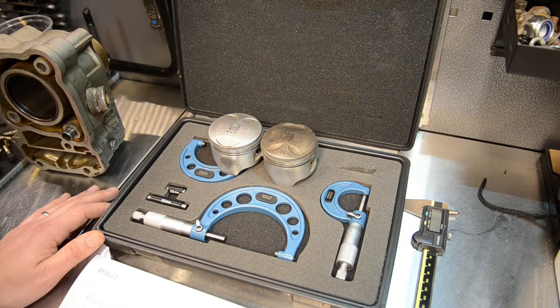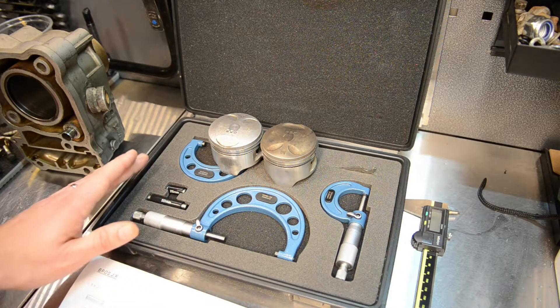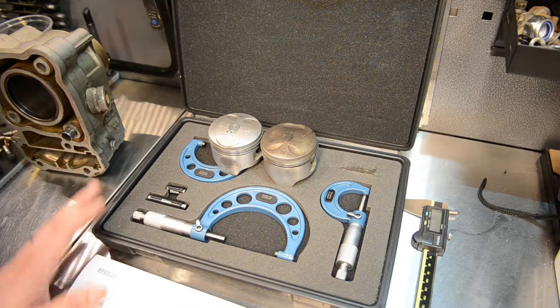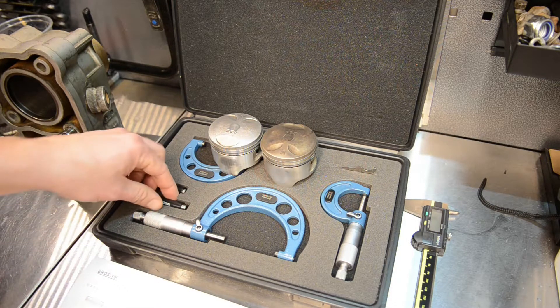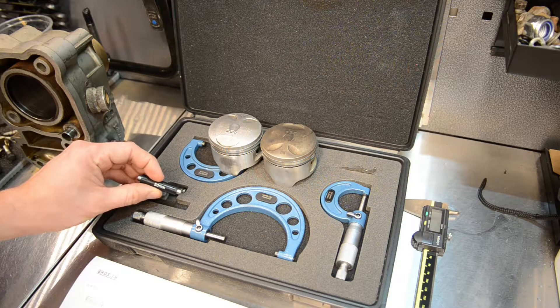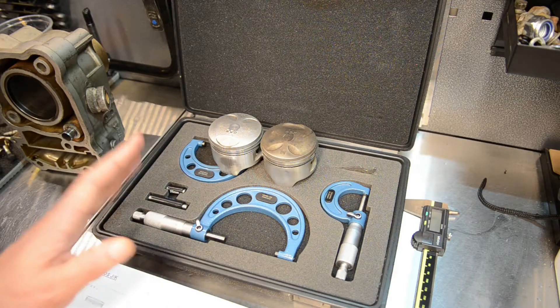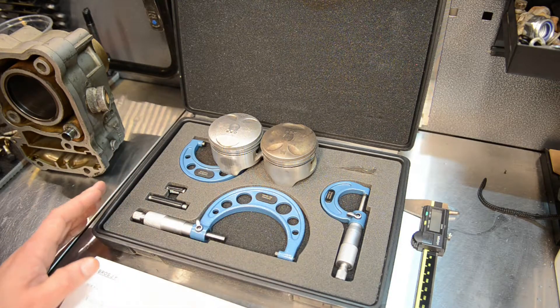Before I start any measurements, I have to zero out this micrometer to make sure it's exactly right. For that I'm going to use these little bars. These are exactly 50mm, so I can calibrate before making any measurements.